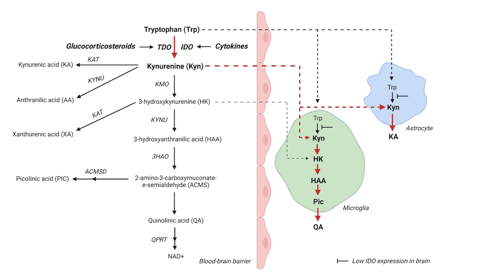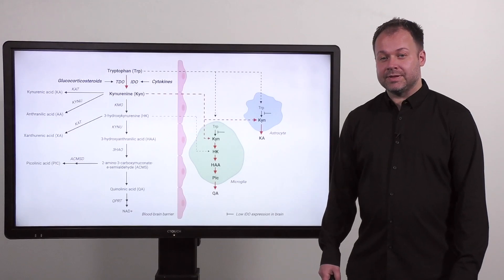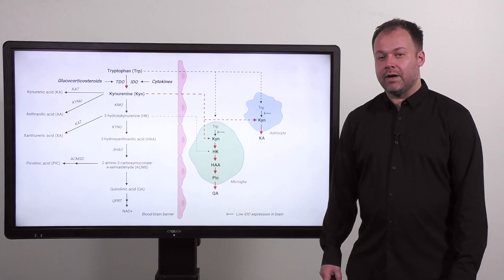Quinolinic acid produced by microglia and kynurenic acid produced by astrocytes that interact with the N-methyl-D-aspartate receptor. The NMDA receptor is strongly linked to psychiatric illnesses and is the target in a specific form of autoimmune encephalitis that can have a lot of psychiatric symptoms.